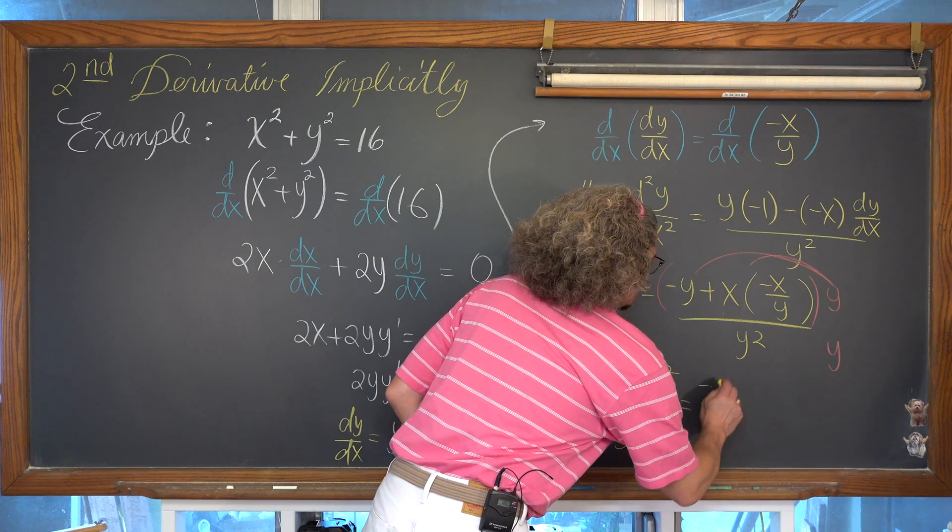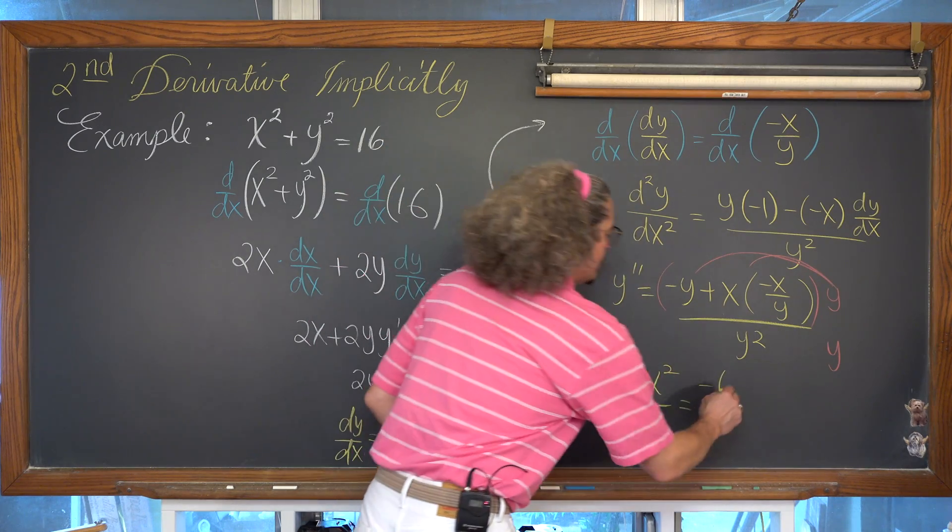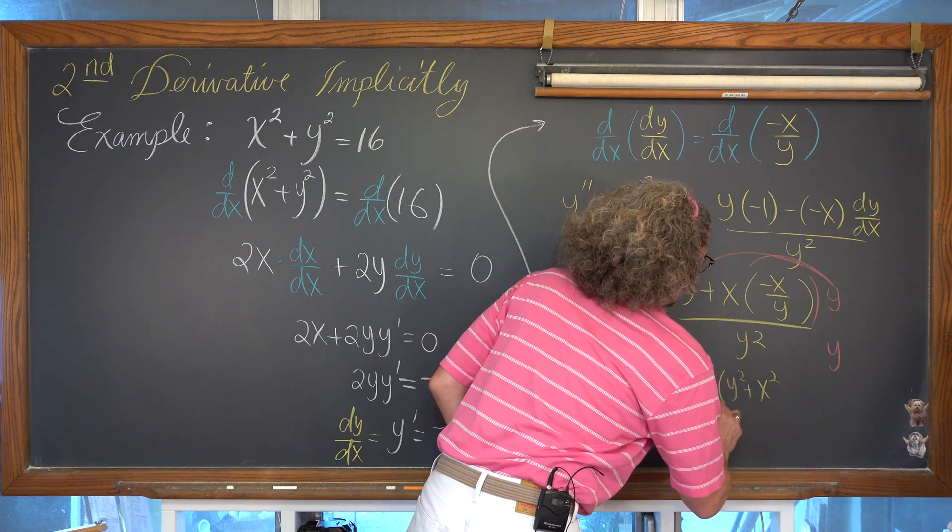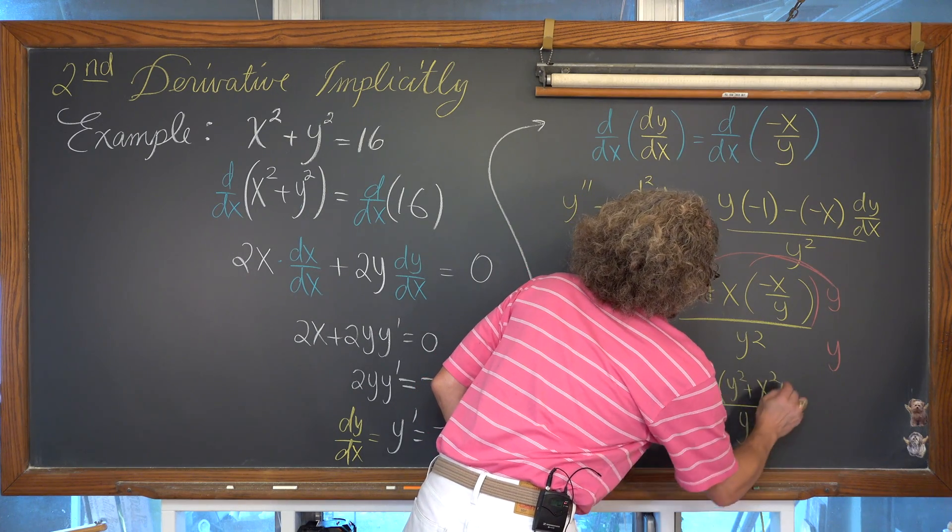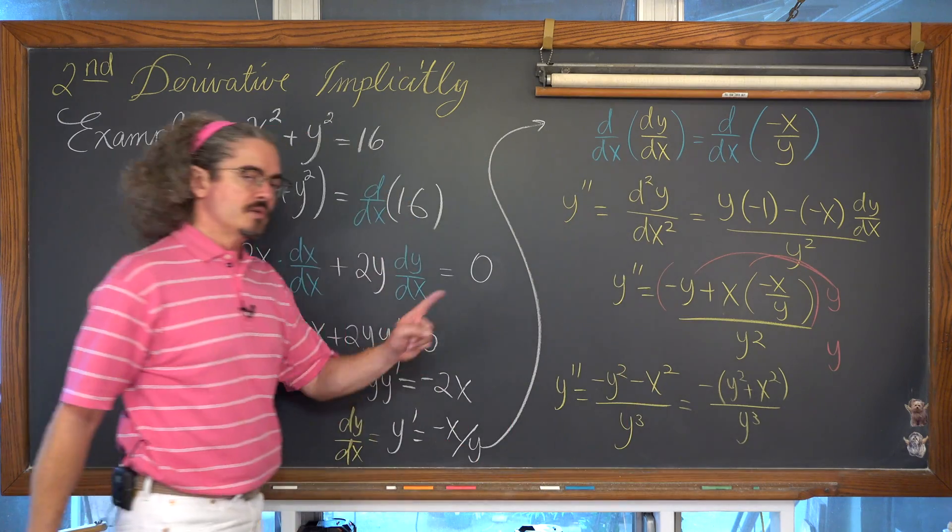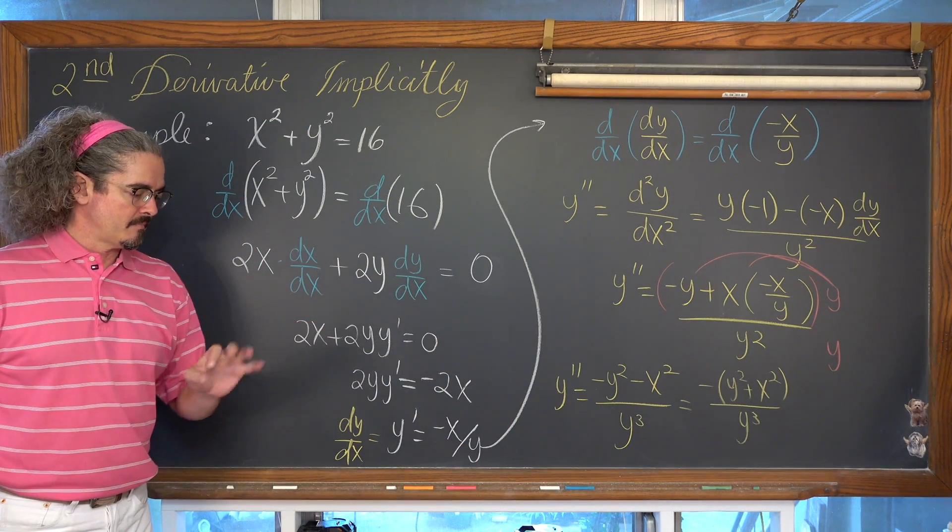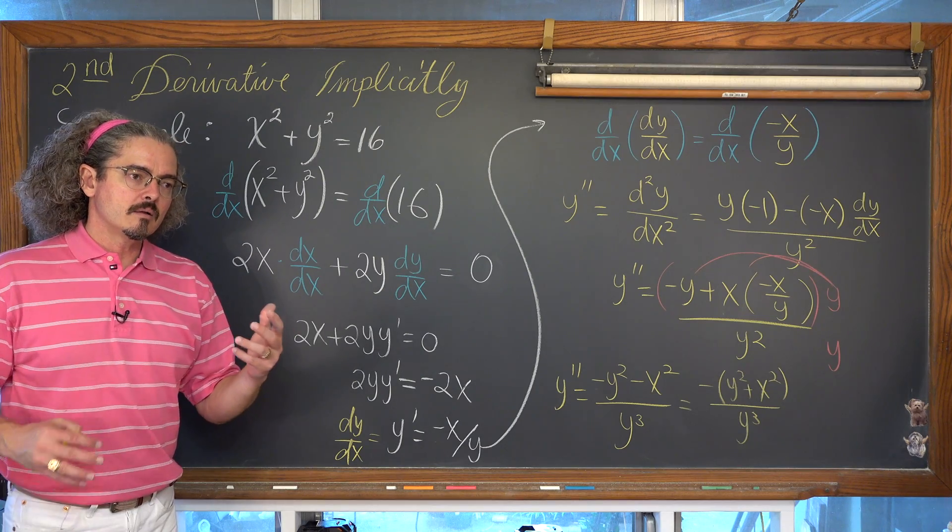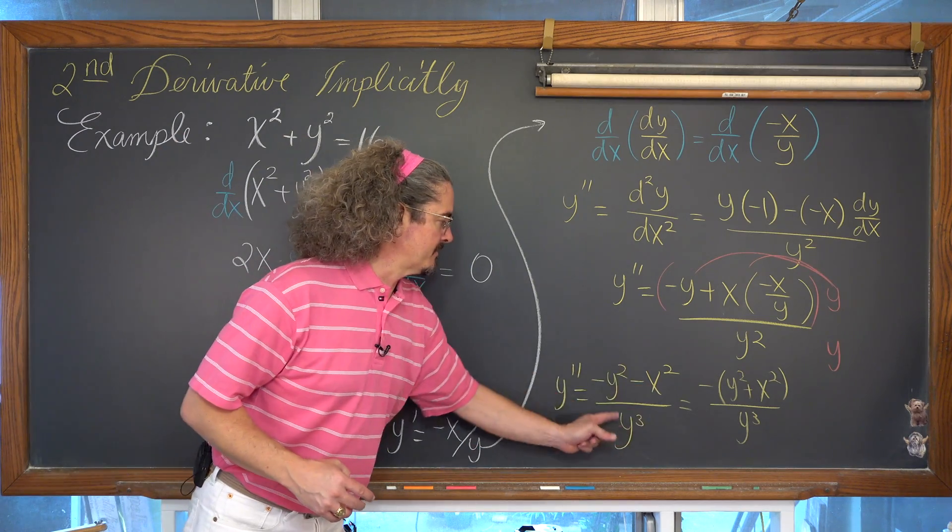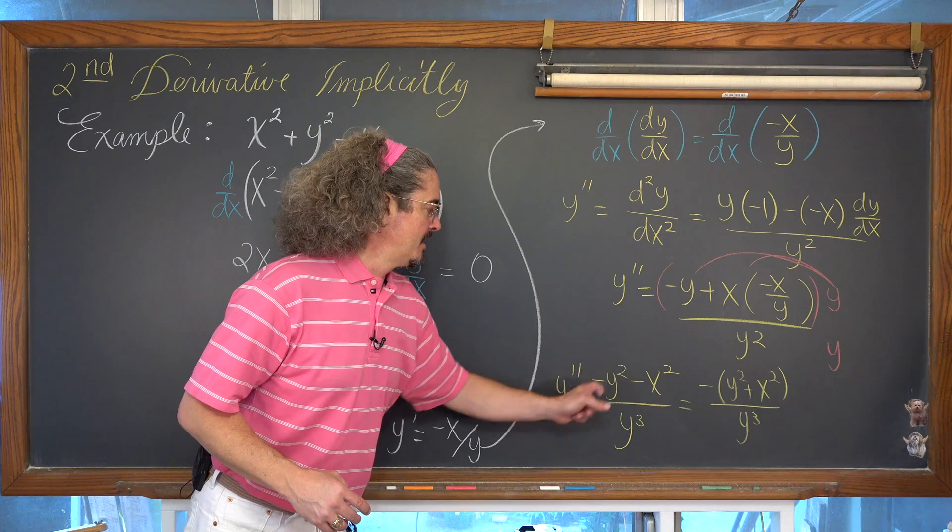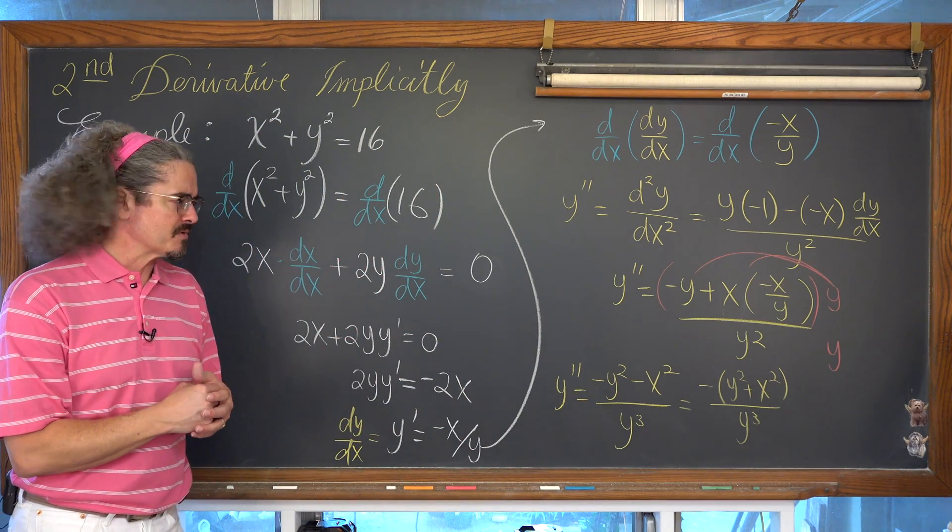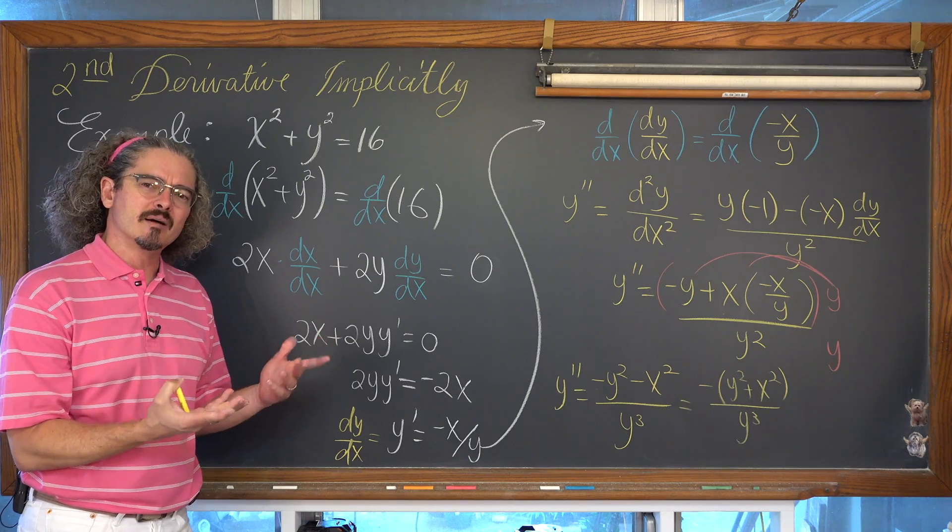So I'm going to take a negative out and have y squared plus x squared over y cubed. Now, if I do that, do you see any potential substitution? Like, why, if I have this sort of complex-ish fraction for my second derivative, maybe why are all my multiple choice answers so simple looking and maybe even have a number in it?